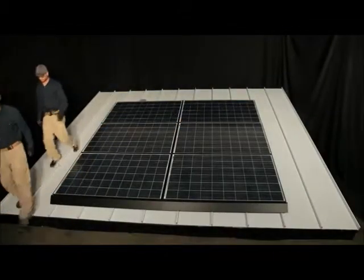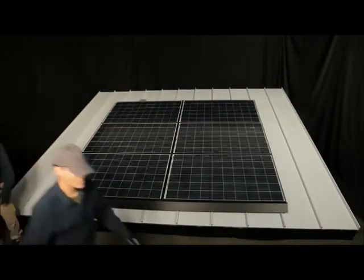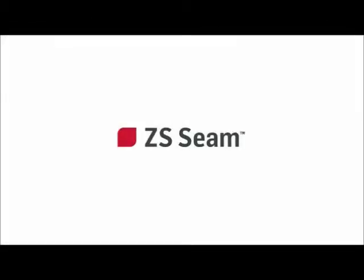This completes the installation of a Zep Solar ZS Seam Array on a standing seam metal roof. For full instruction on how to install a ZS Seam PV array, visit the Zep Solar website at zepsolar.com. There, you will also find the Zepulator online design tool, which will assist you in your layout design, specify attachment point spans and cantilevers, and generate a bill of materials.